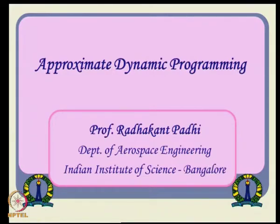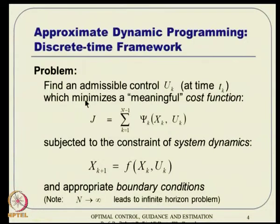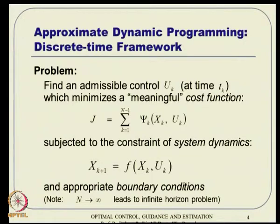Let us start with approximate dynamic programming. Everything will happen in the discrete time domain, so integrals are substituted with summations. The objective is to find an admissible control u_k which minimizes a cost function J, subject to the constraint of system dynamics, with appropriate boundary conditions. This entire class will assume n tends to infinity, meaning we are talking about infinite time problems, which are typically regulator problems.